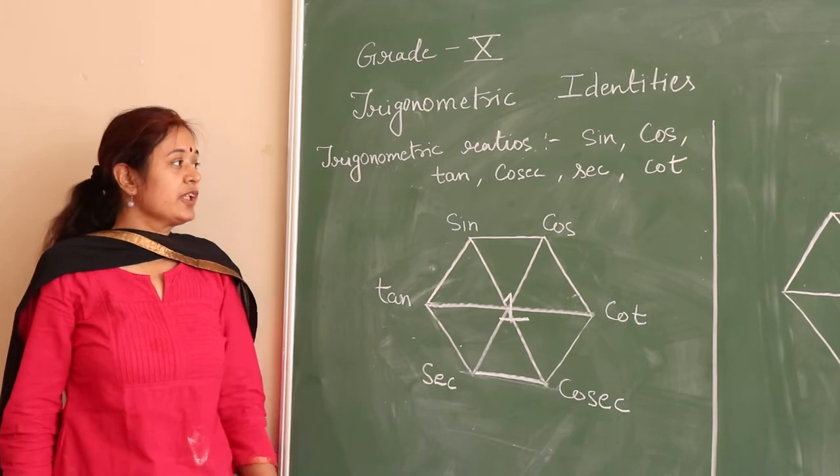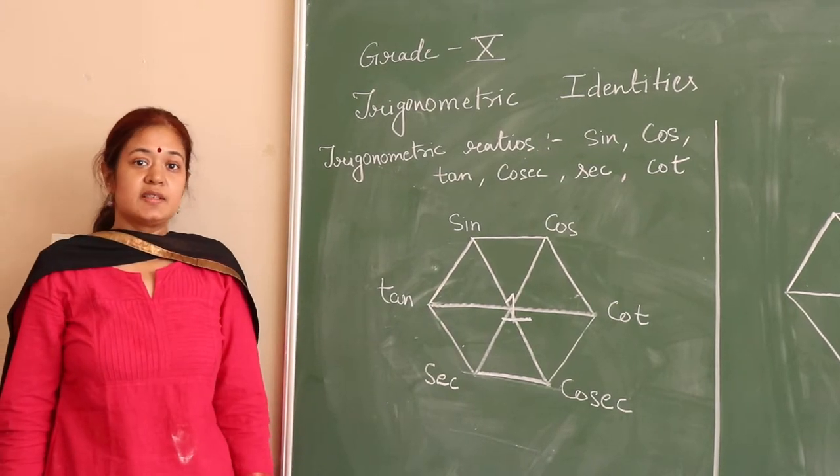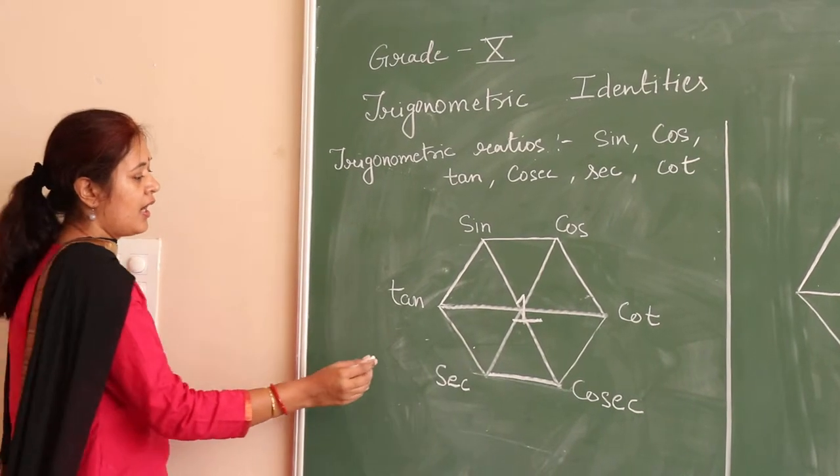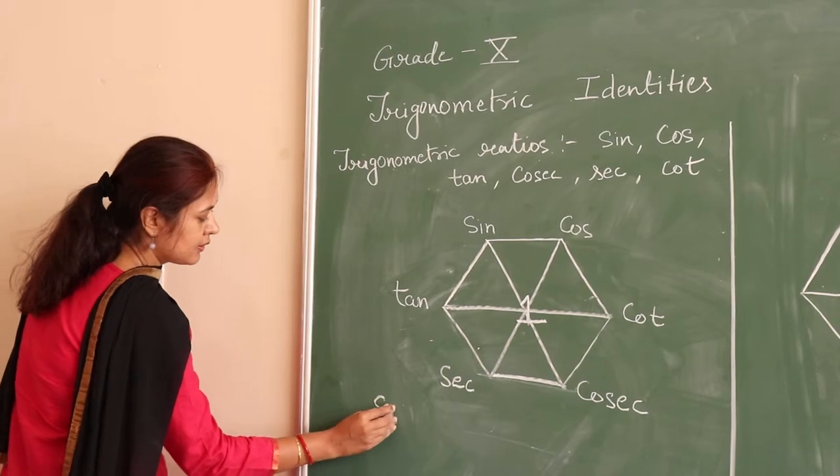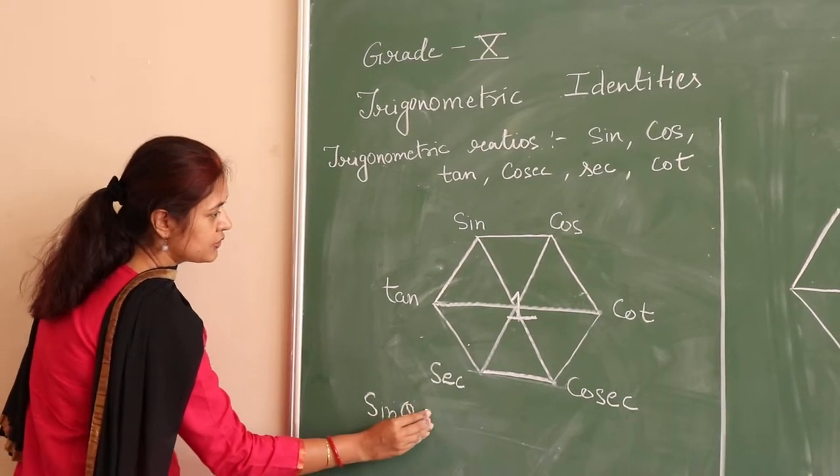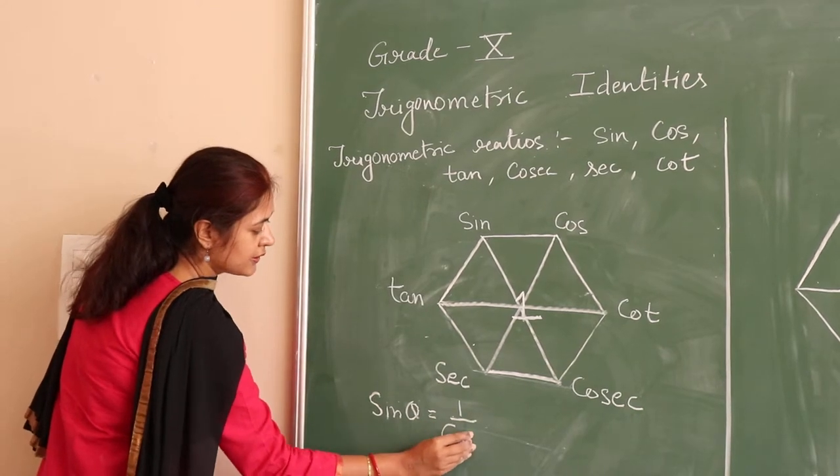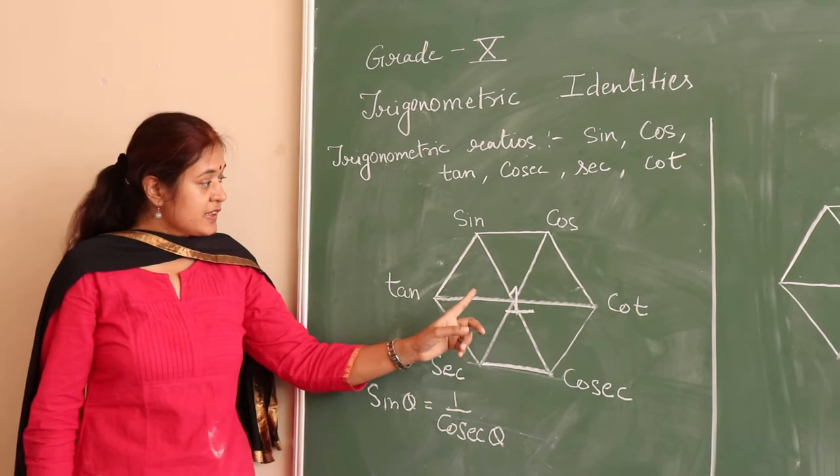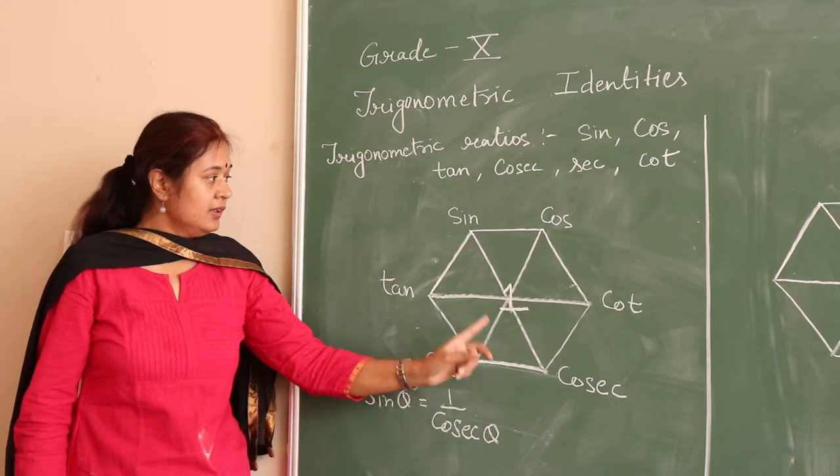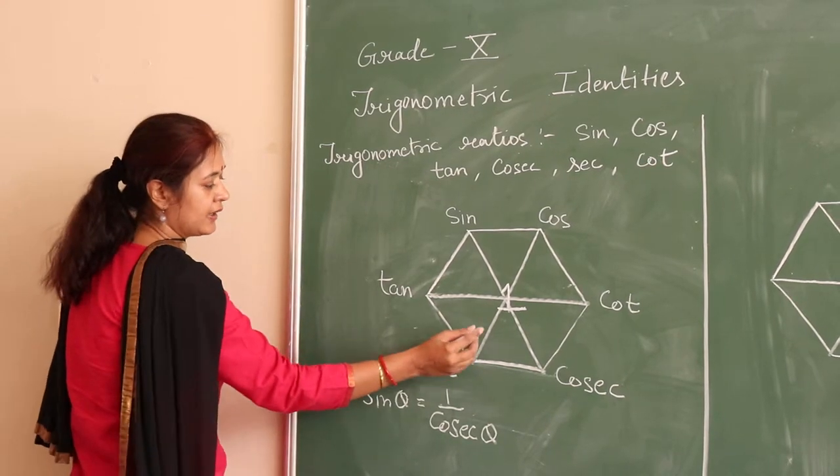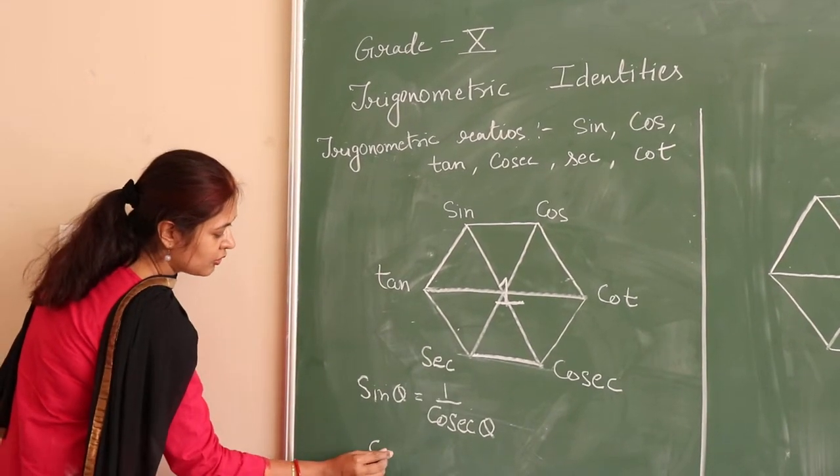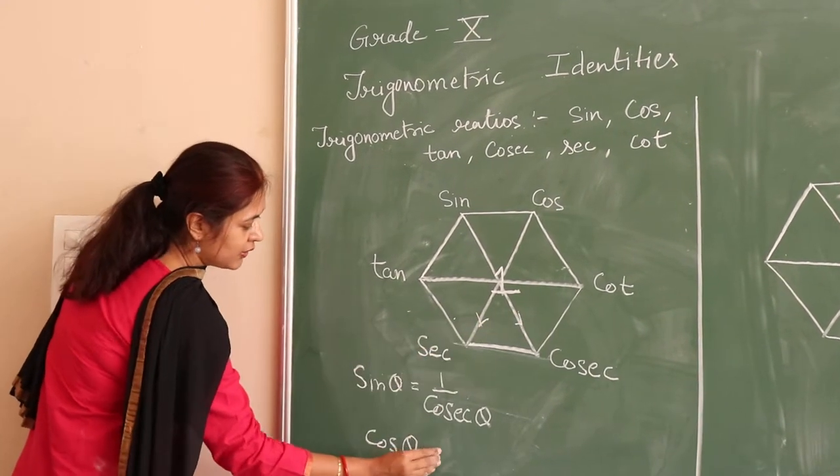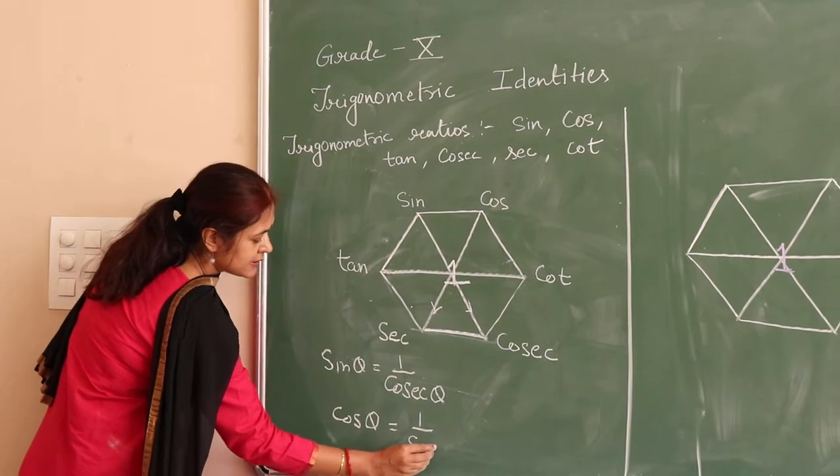With the help of this hexagon we can learn and memorize trigonometric identities easily. So first identity is sin theta is equal to 1 upon cosec theta. So here we are focusing on a diagonal, first diagonal. Now we are focusing on the second diagonal. It says that cos theta is equal to 1 upon sec theta.